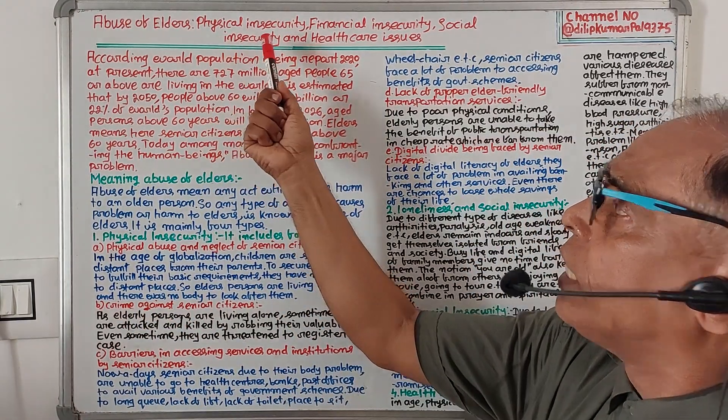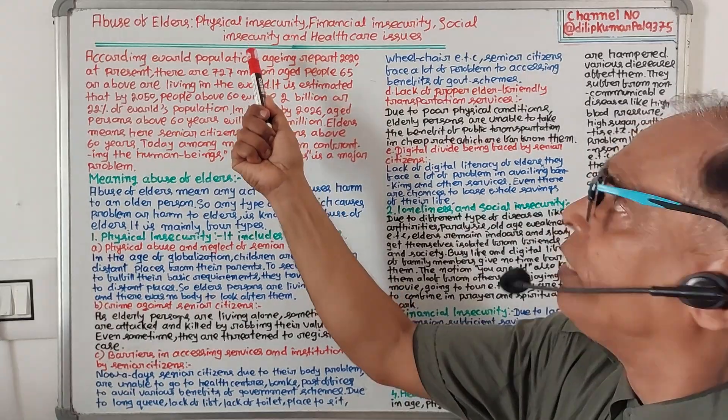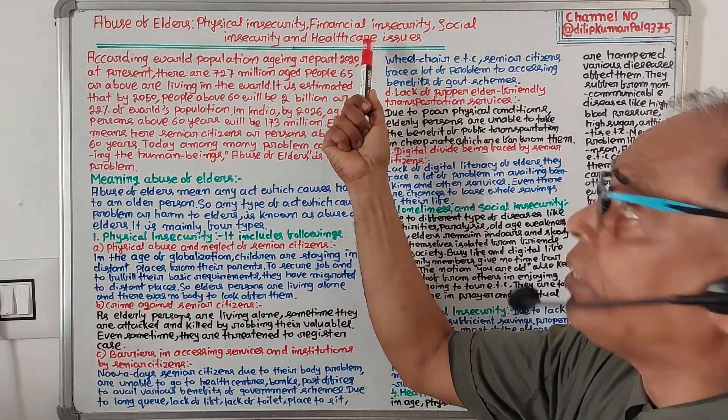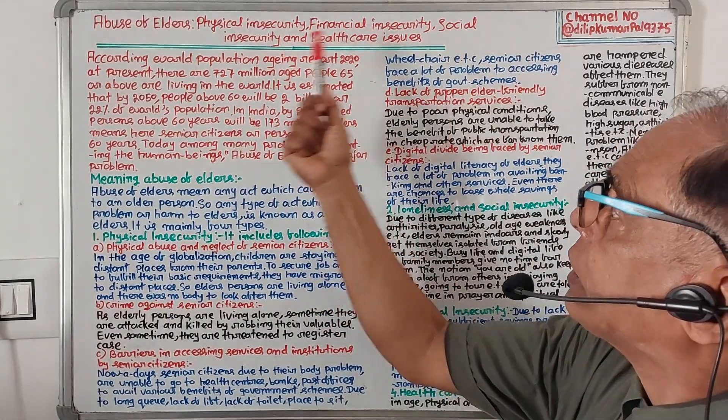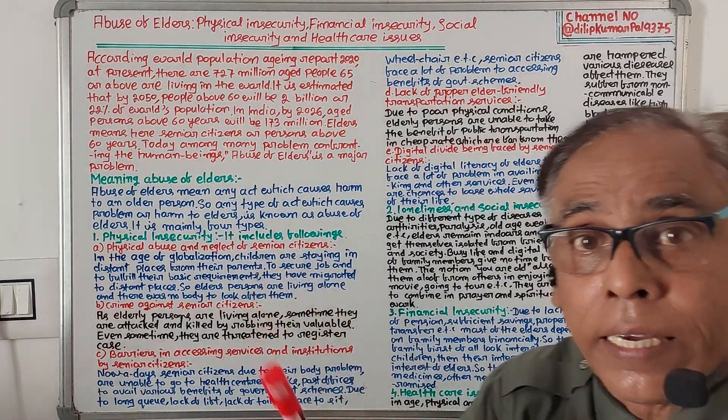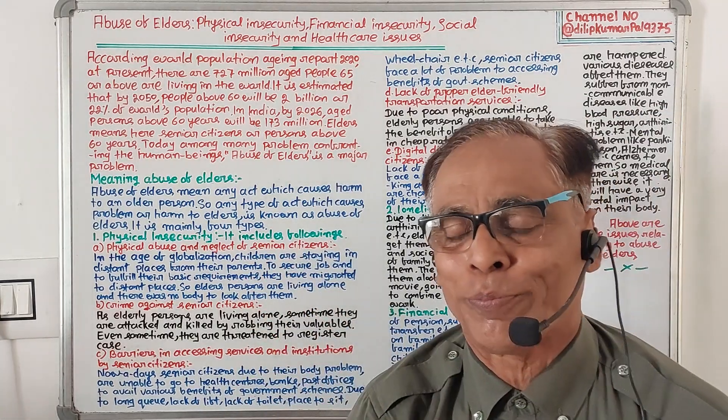The four aspects are: Physical Insecurity, Financial Insecurity, Social Insecurity, and Healthcare Issues.